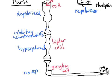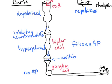Remember, the bipolar cells, if left completely to their own devices, will fire an action potential. So once that inhibitory neurotransmitter is gone, the bipolar cell actually fires an action potential rushing down to the bipolar cell. The bipolar cell releases its neurotransmitter onto the ganglion cell, and this neurotransmitter — the one released by the bipolar cells — is actually excitatory. So it stimulates the ganglion cell, the ganglion cell depolarizes, and fires an action potential that sends that signal to the brain.